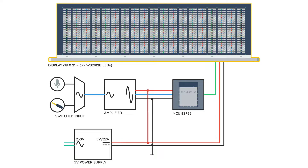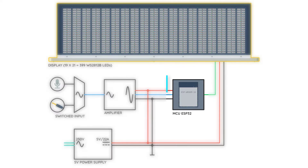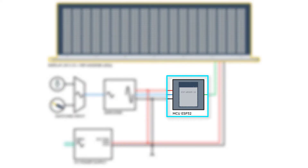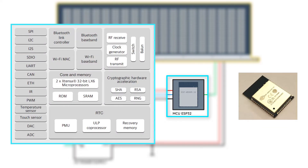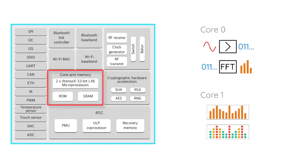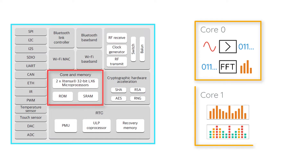Let's get down to business. The most important element of the design is the dual-core ESP32 chip with a built-in 12-bit SAR ADC converter. Tasks performed by the ESP have been distributed among two cores: Core 0 is responsible for signal sampling and FFT, while Core 1 is responsible for animations and driving the matrix.